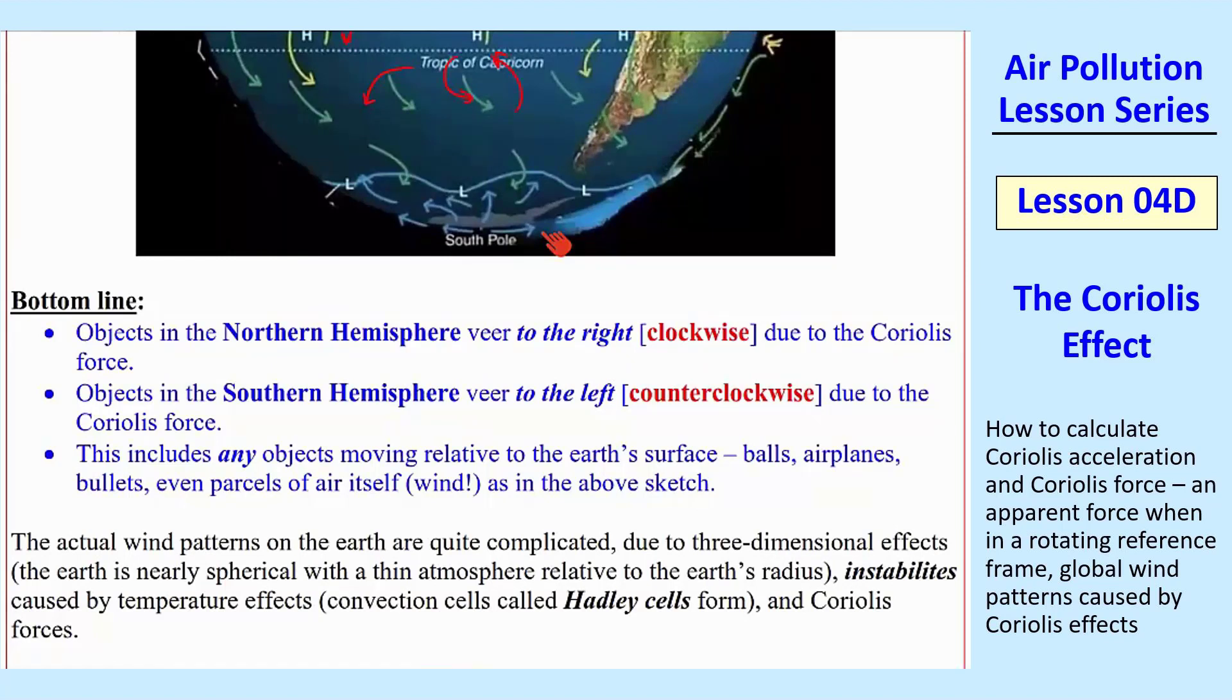There's all these complicated patterns that come up called Hadley cells. I just want to mention bullets briefly. It turns out that Coriolis force is very significant in bullets because they travel so fast. Remember, capital U is the speed, and that is part of your Coriolis acceleration and force. So bullets experience a very large Coriolis force, so much so that marksmen have to correct for it.